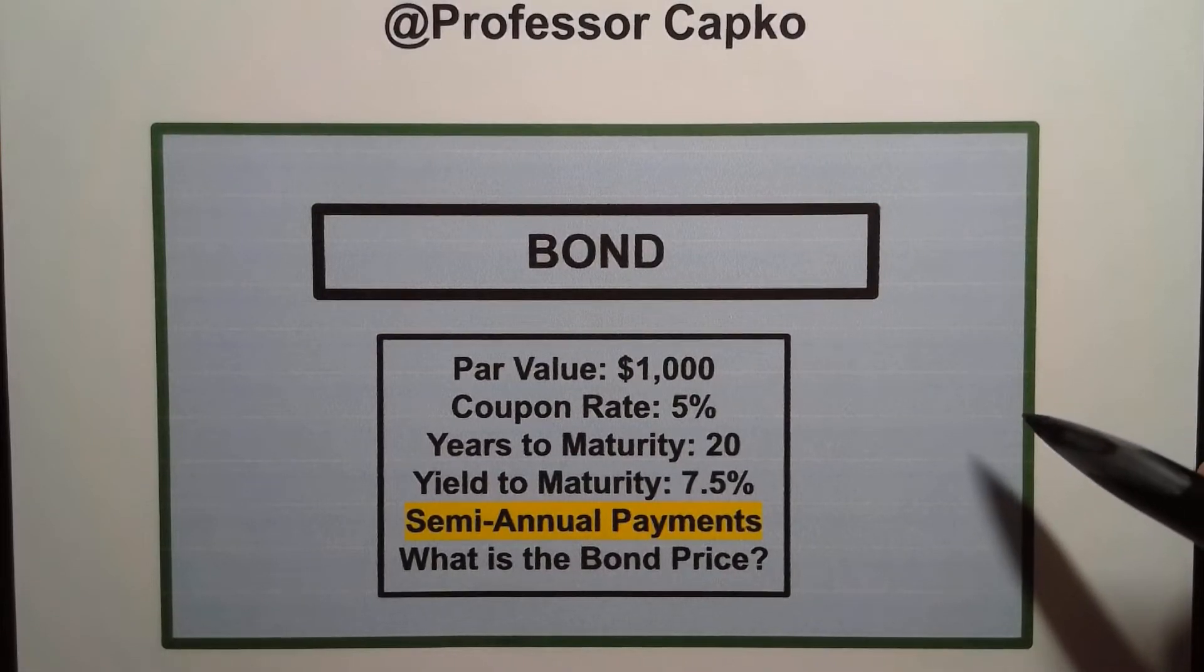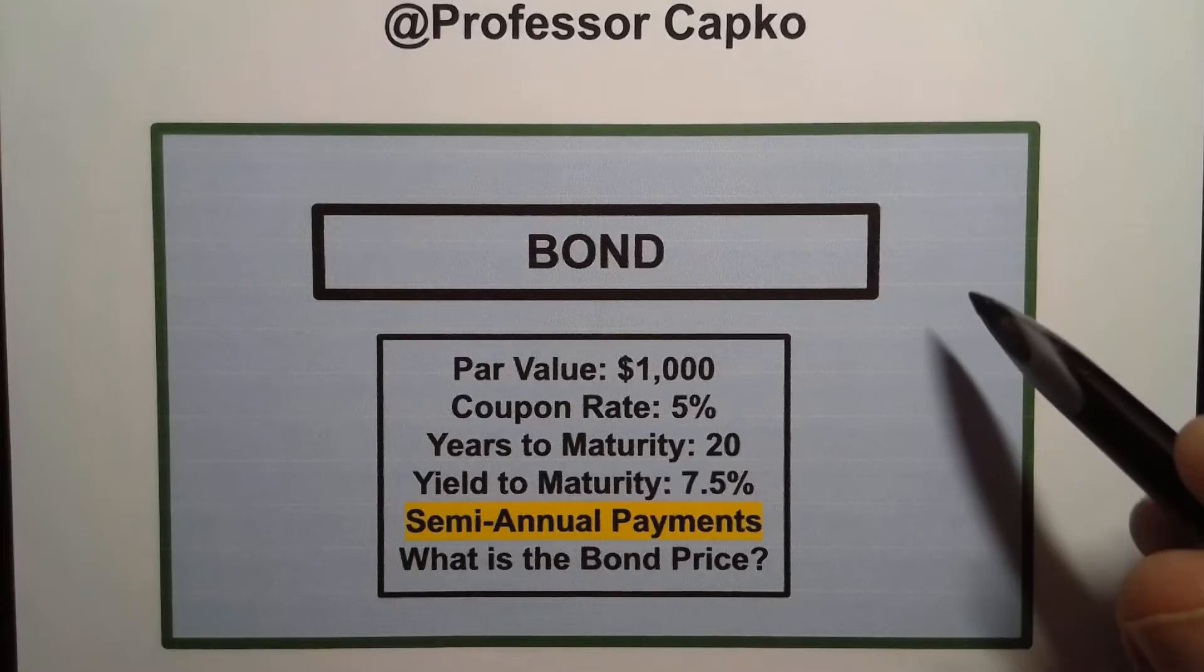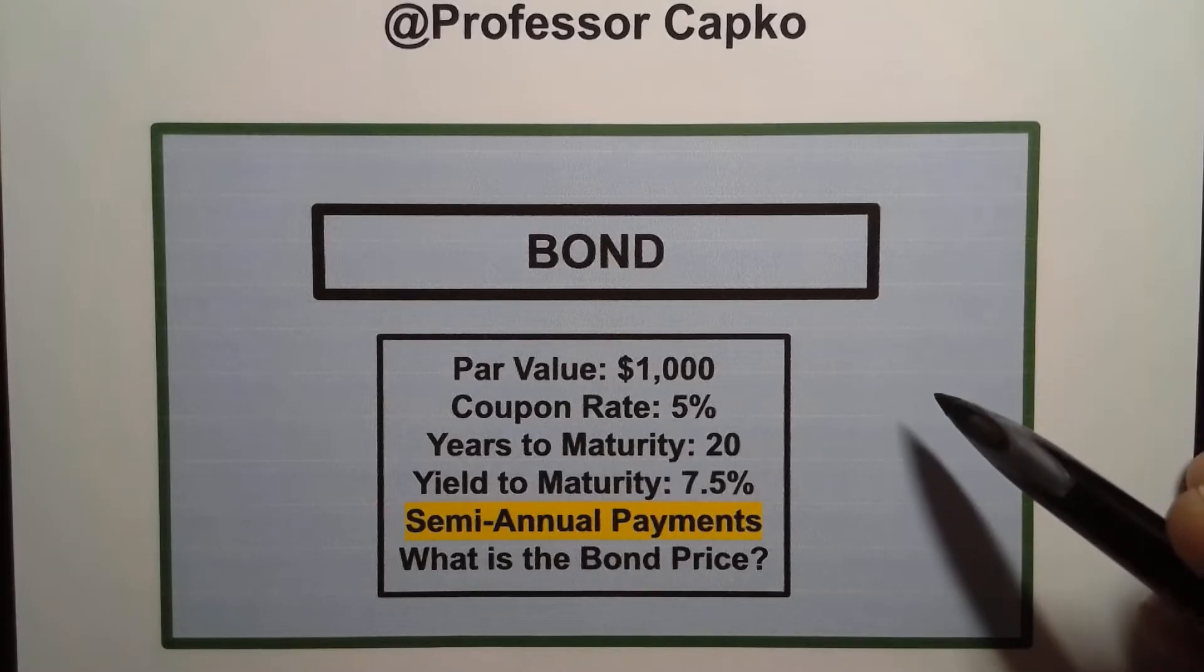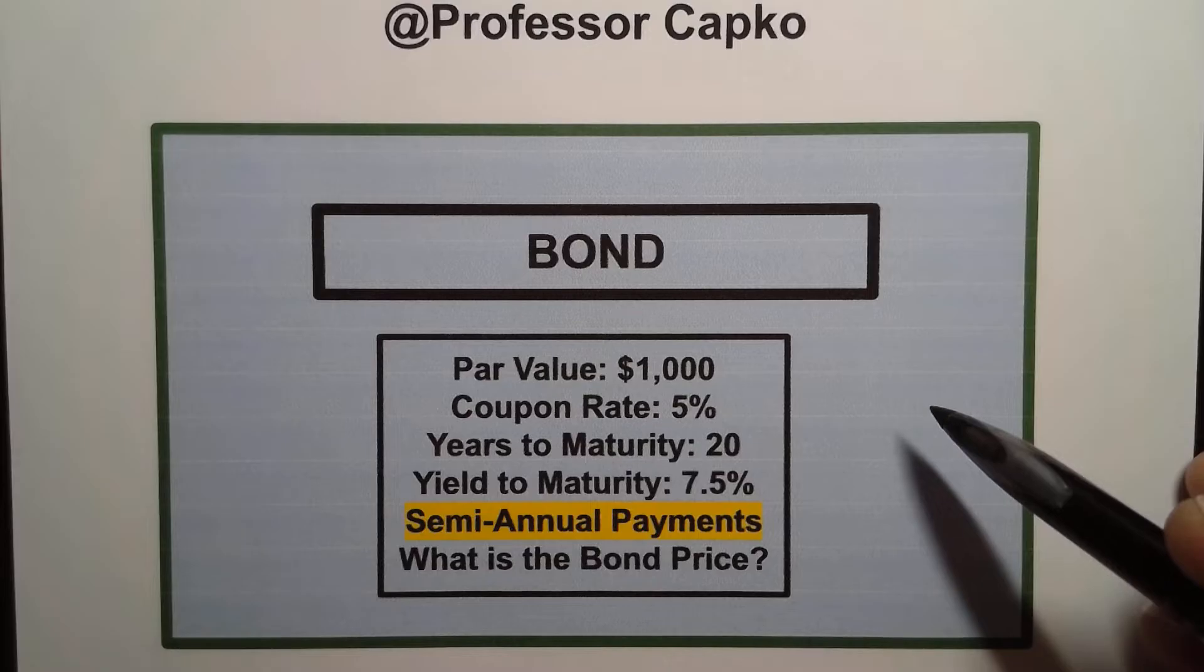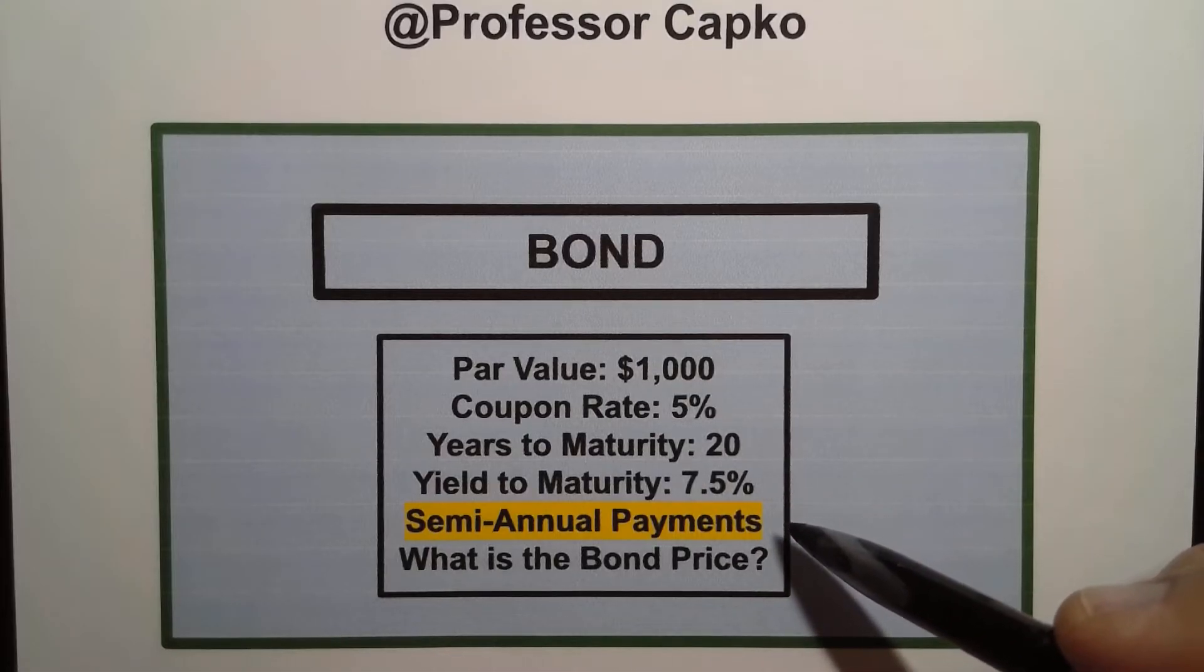Hello everyone. I hope everyone is doing well. Some of you have watched my prior bond price calculation video in which we had a bond very similar to this one except that the payments were annual instead of being semi-annual. In other words they came once a year and we calculated the bond price using a Texas Instruments BA2 plus calculator.